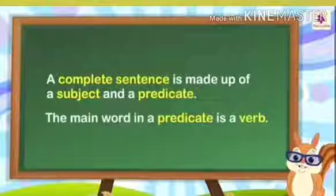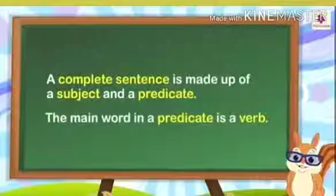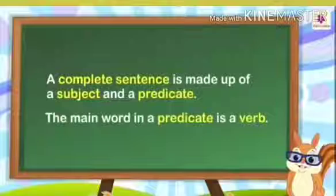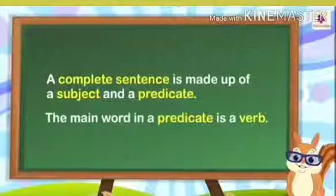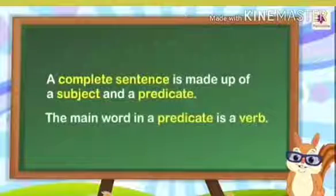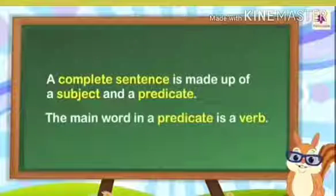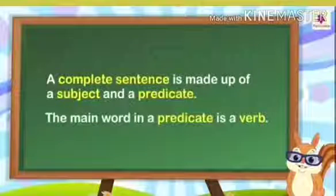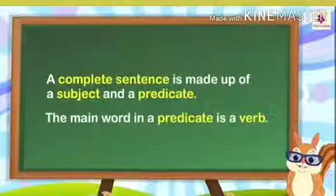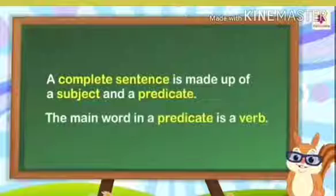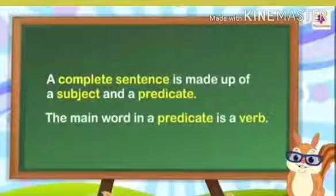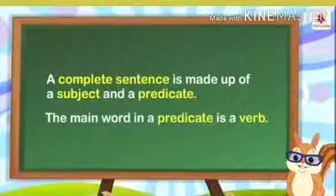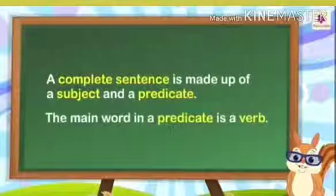So children, the main word in a predicate is a verb. So verb is the main word in the predicate — in the second part of the sentence. You have to remember that a sentence is divided into two parts, and the second part, the predicate, has the main word that is the verb.